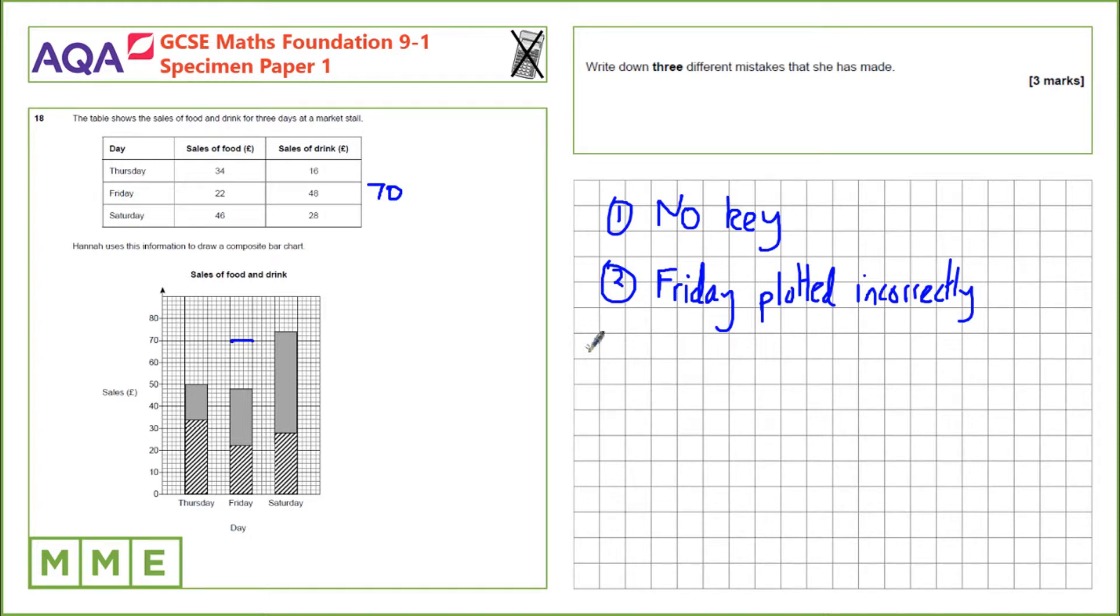Our third point is we'll just need to check over the rest of the data and if we notice here there should be 46 pounds of food on Saturday and 28 pounds of drink on Saturday. From the other ones it seems like she's plotted sales of food as the bottom bar here.